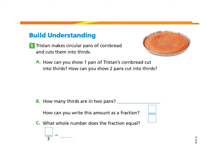You can pause at any time. We will begin under Build Understanding, Part 1. Tristan makes circular pans of cornbread and cuts them into thirds. Let's look at Part A: how can you show one pan of Tristan's cornbread cut into thirds? How can you show two pans cut into thirds? I will start by making a circle because the pans are circular, and I know we need to cut them into thirds, which means three parts. So I will make a Y that looks like this.